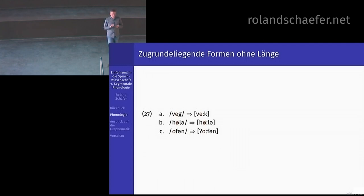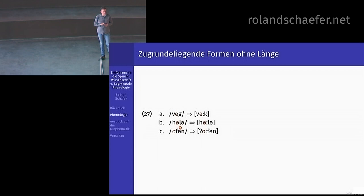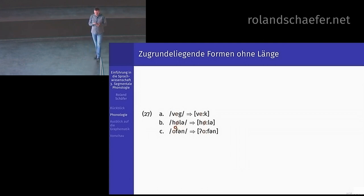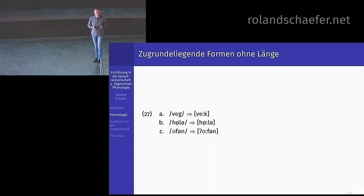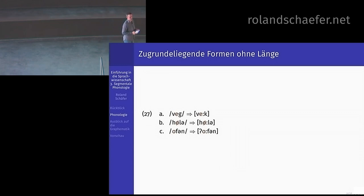Zugrunde liegende Formen ohne Länge: die Länge kann bei »Weg« ausgerechnet werden, weil die Silbe Akzent trägt. »Höhle« kriegt die Länge, weil es ein gespannter Vokal ist und betont. Das O in »Ofen« ebenso. Vielmehr trennt die zugrunde liegenden Formen und die phonetischen Realisierungen nicht viel voneinander — das ist echt überschaubar.